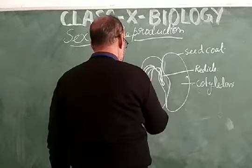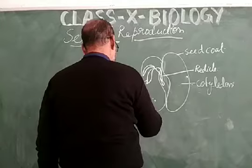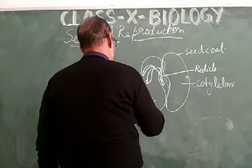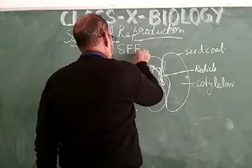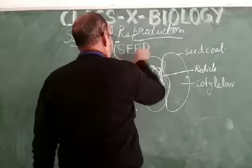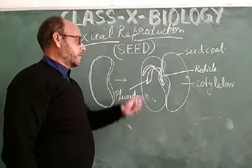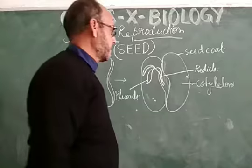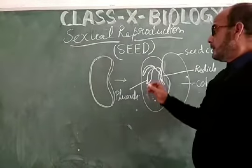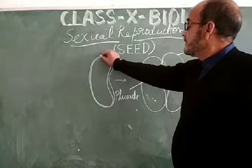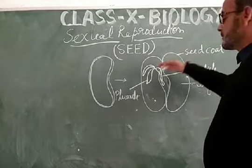This is the root. This is a dicot seed, and you are looking at the structure of a seed. This seed is coated by the seed coat, which is the outer covering of the seed.